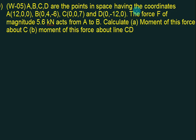These three are the points in space having coordinates A, B, C, D that is given to you. All four points are known to us. Let's represent all four points. If the force is directed from 5.6 kN act from A to B. So let's show the force A and what is the magnitude of this force? A is 5.6.